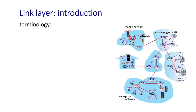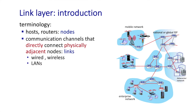Let's start off by defining some link layer terminology depicted in the diagram on the right. We see the hosts and routers that we've seen throughout this course — we'll refer to them simply as nodes here. In the context of the link layer, the role of the link layer is to serve as a communication channel directly connecting physically adjacent nodes. Two nodes might be directly connected by a physical wire, by a wireless link, or by a local area network.